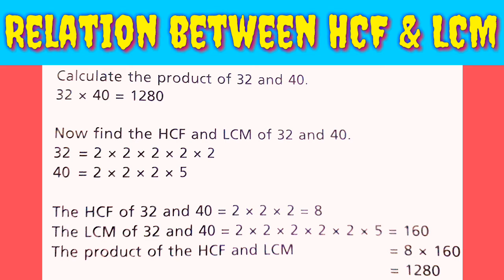Now, find the HCF and LCM of 32 and 40. 32 is equal to 2 to the power 5, and 40 is equal to 2 to the power 3 multiplied by 5. The HCF of 32 and 40 is equal to 2 to the power 3, which is equal to 8. The LCM of 32 and 40 is equal to 2 to the power 5 multiplied by 5, which is equal to 160.